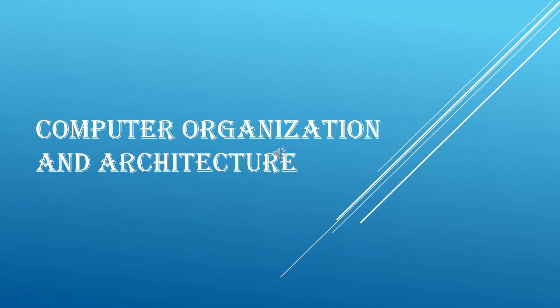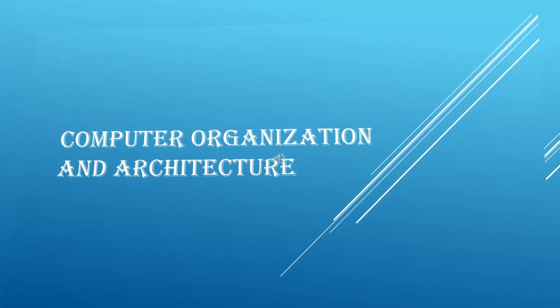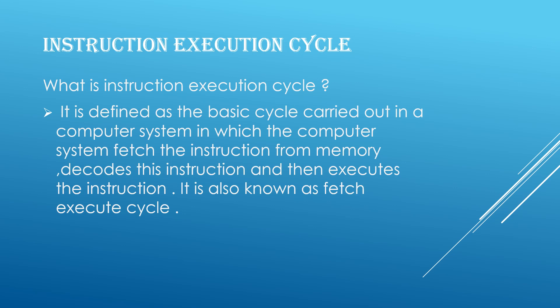Computer organization and architecture: instruction execution cycle. The instruction execution cycle refers to the basic cycle executed in a computer system to perform operations. The instruction cycle is composed of three stages: fetch, decode, and execute.